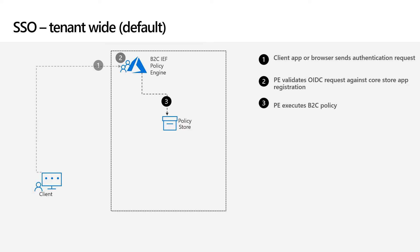The policy engine executes the policy. Behind the scenes, policies are stored in Azure Blob storage partitioned by tenant. The policy engine evaluates the policy specified in the URL into memory and sequentially executes its steps. The policy engine examines the session cookies that had been set from any prior authentication. It will find those set during the login to the Contoso Groceries app, and since those are scoped to the tenant, they can be used for single sign-on in this authentication request to the Contoso Pharmacy app.